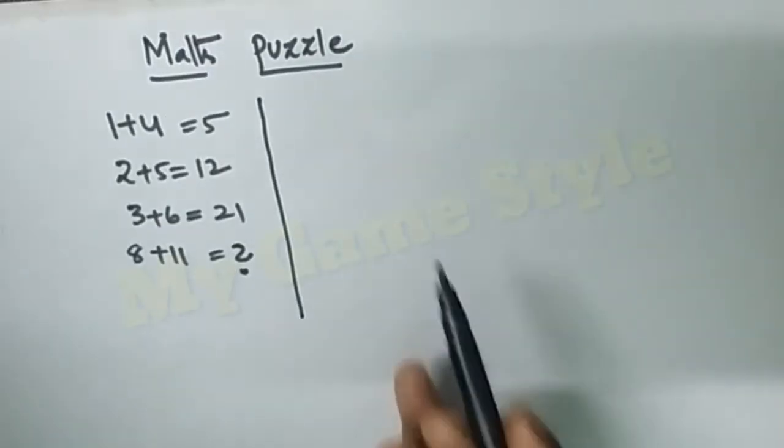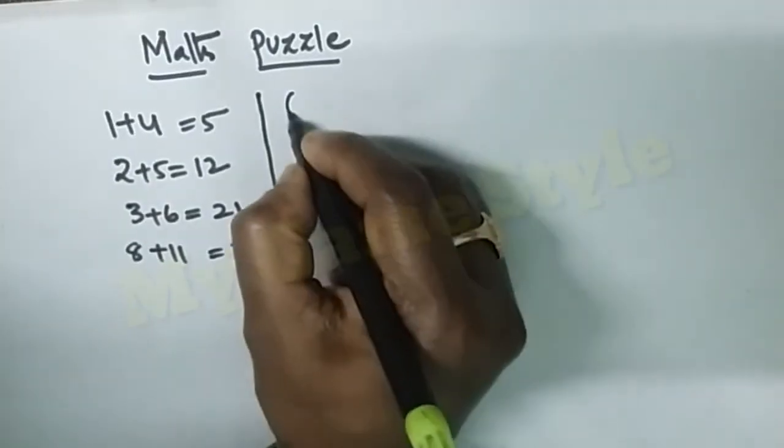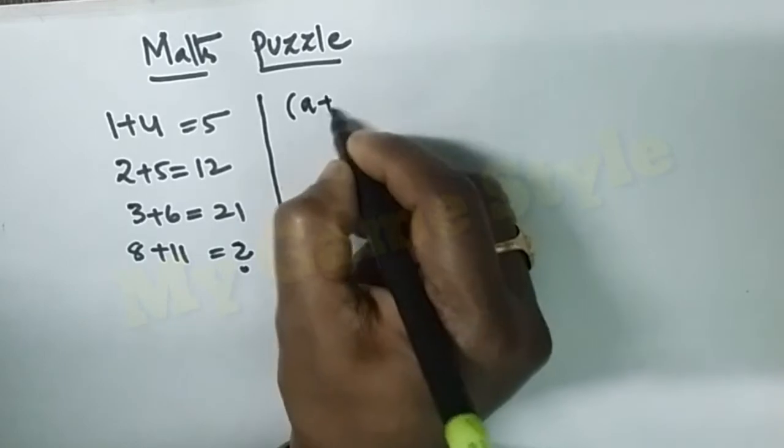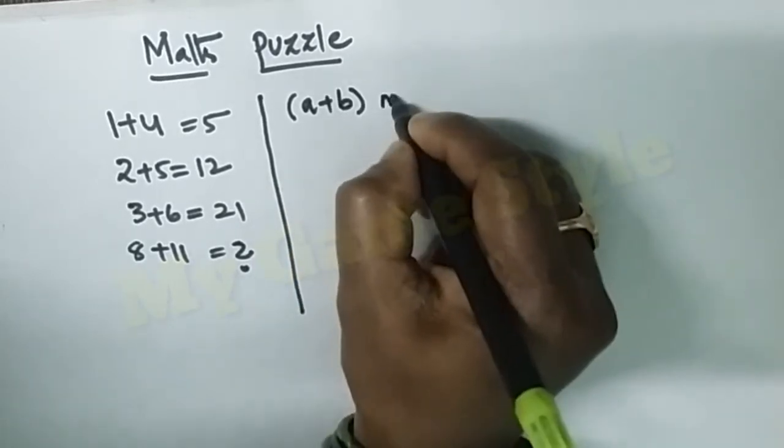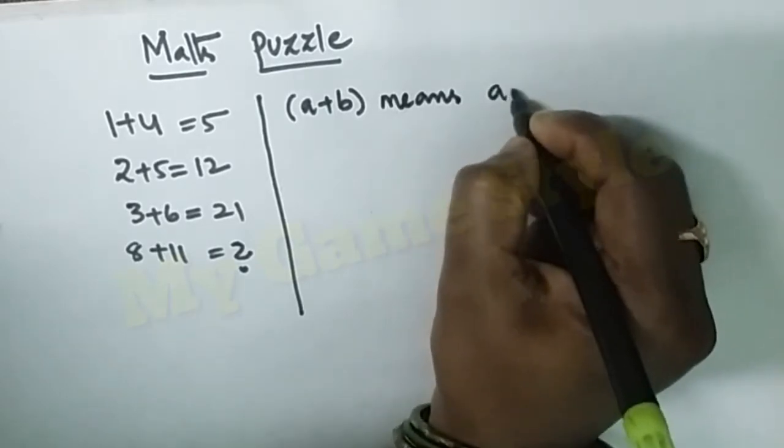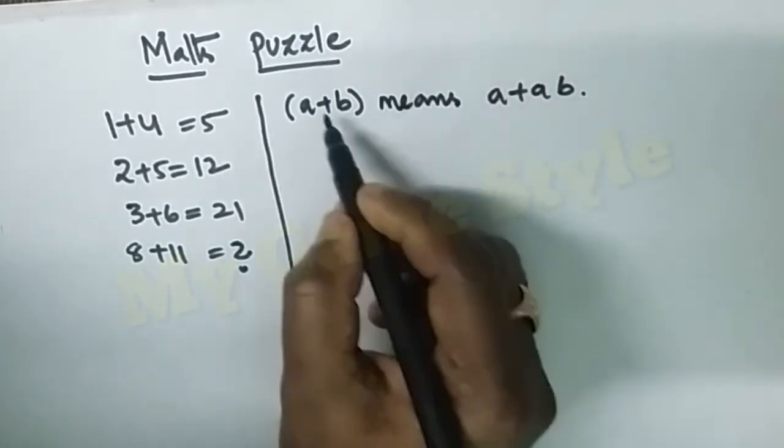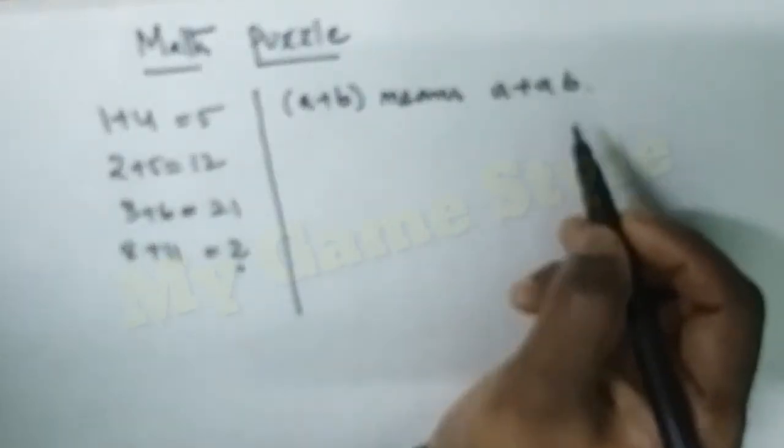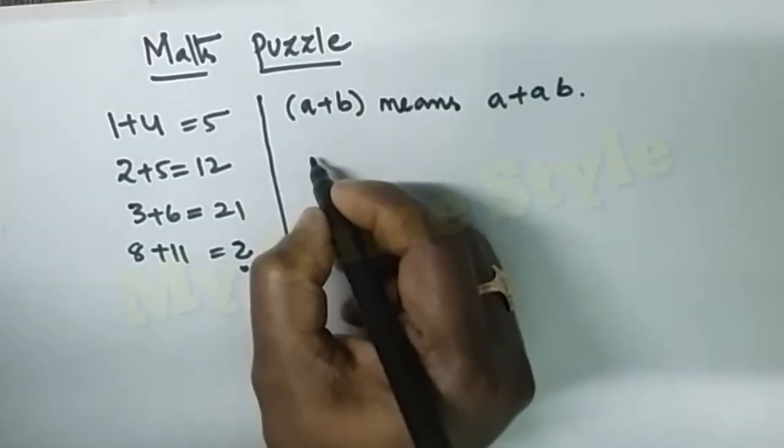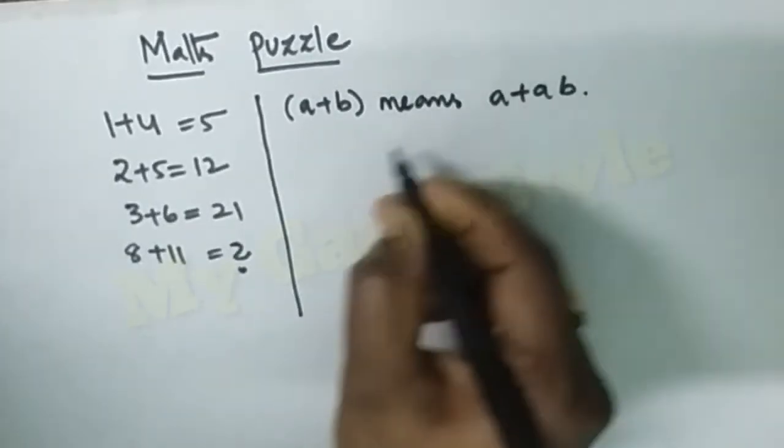So actually, this formula a+b means a+a×b. That's right, a+b means a+a×b. I will show you how we will solve this solution using this formula.